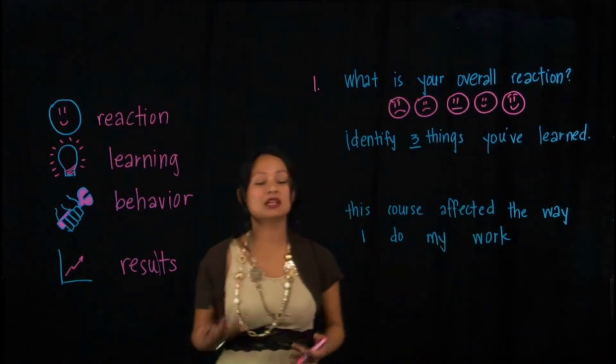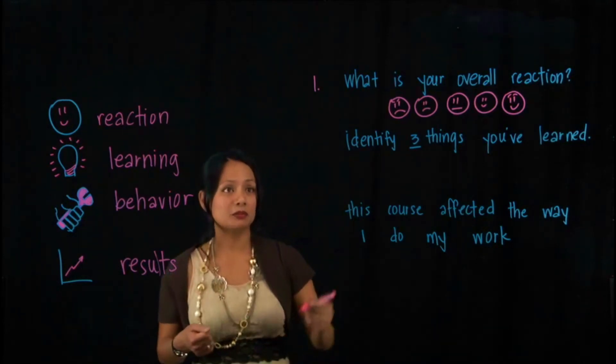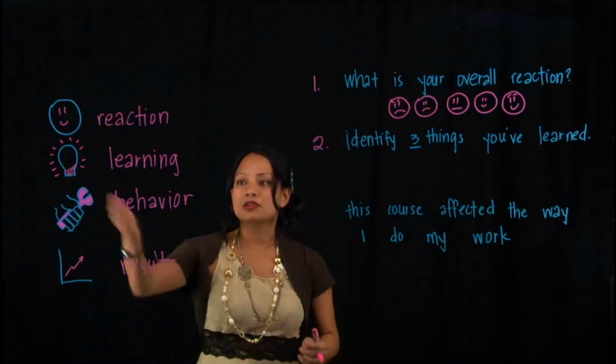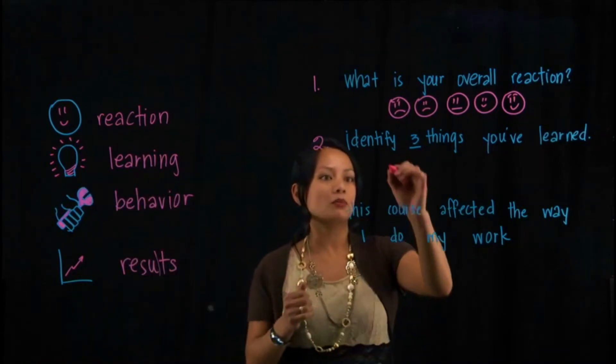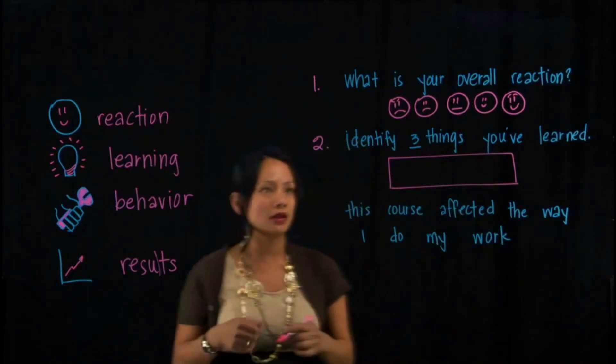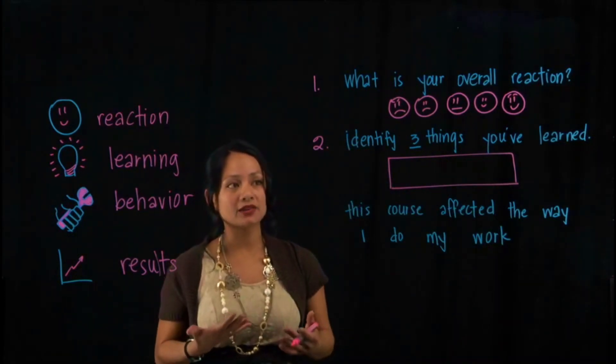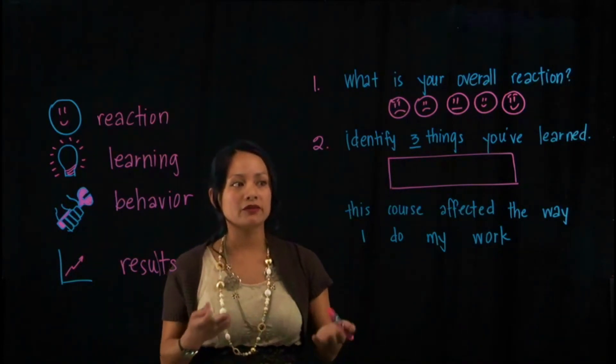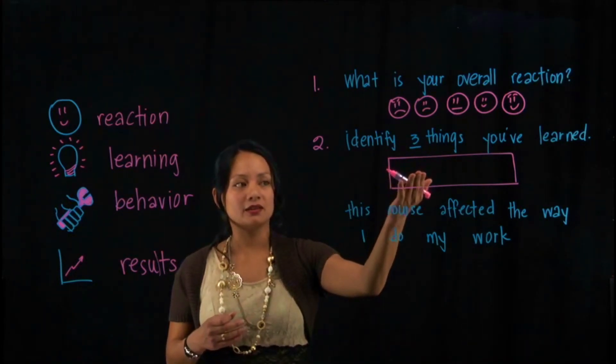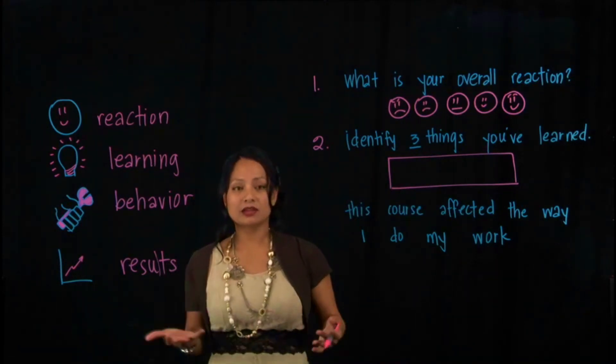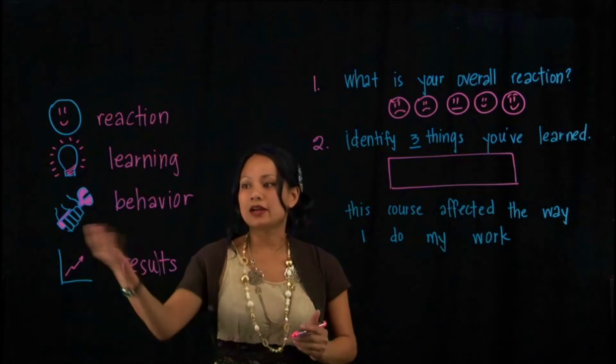To assess learning, you can leave this as an open-ended question. And you can simply bring this out by asking people to identify the three things that they've learned out of your course. Hopefully, whatever it is that they put down is closely aligned to any objectives you've identified during the design of your instruction.